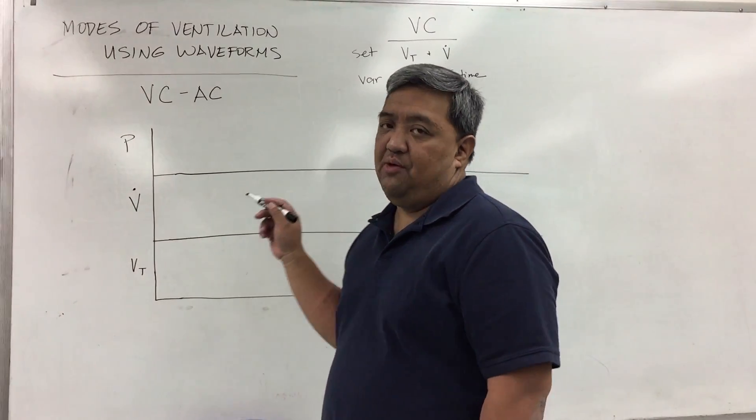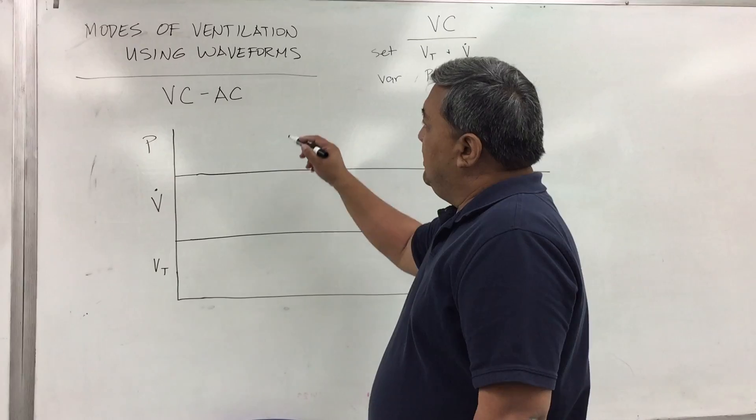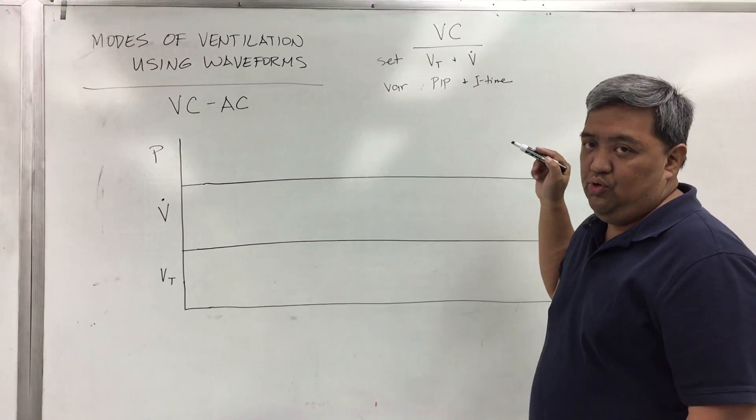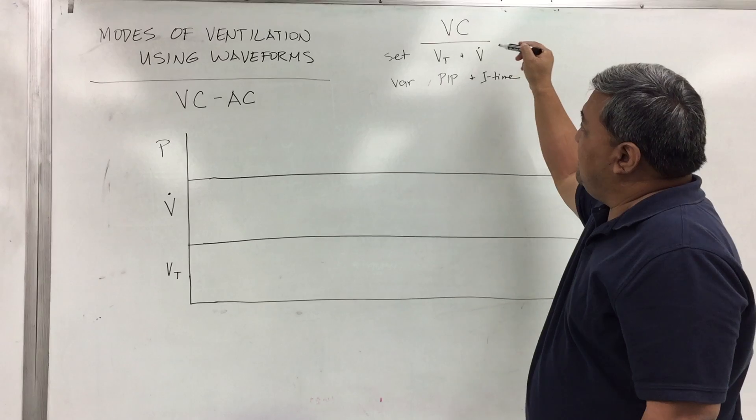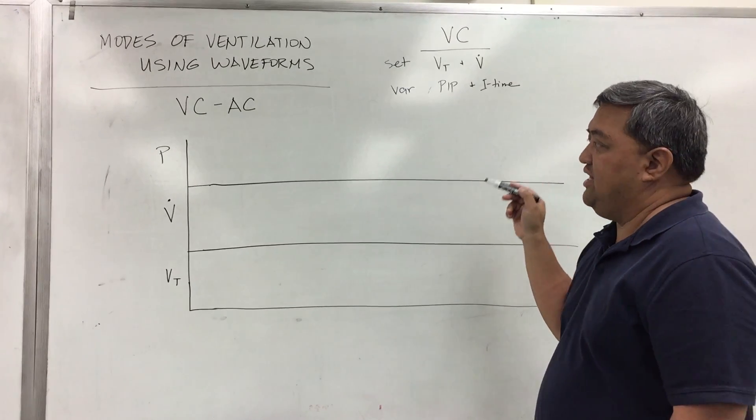The next mode that we're going to talk about is volume control in the assist control mode. In volume control, again based on our controllers earlier, set is tidal volume and flow and variable is peak inspiratory pressure and your I-time.